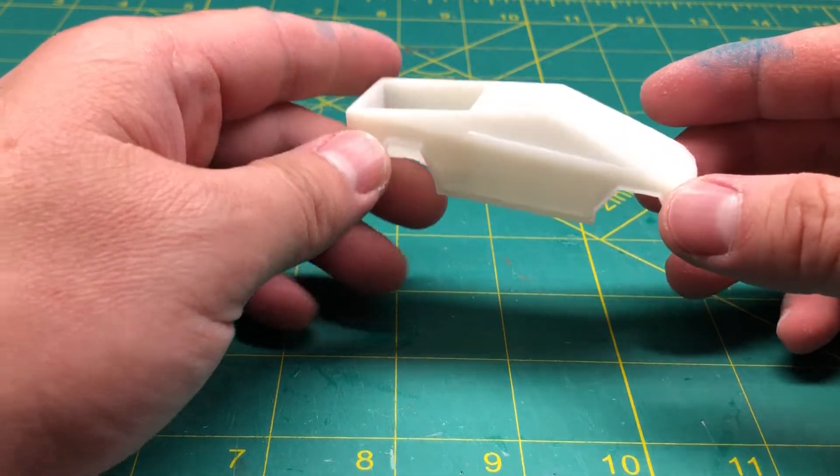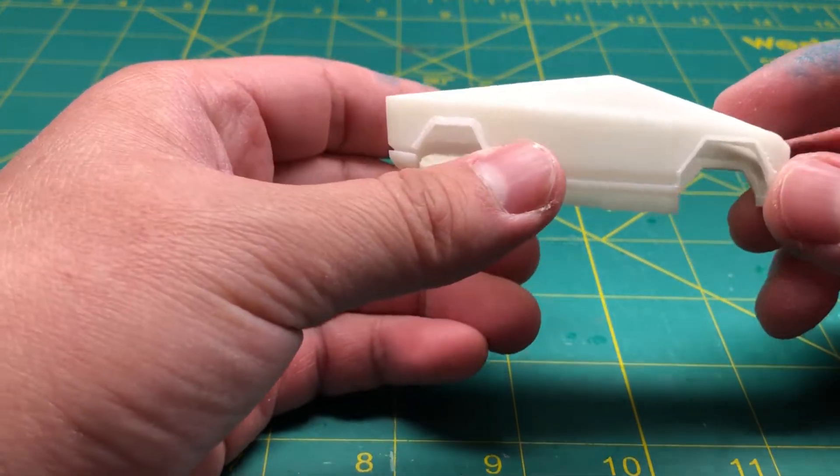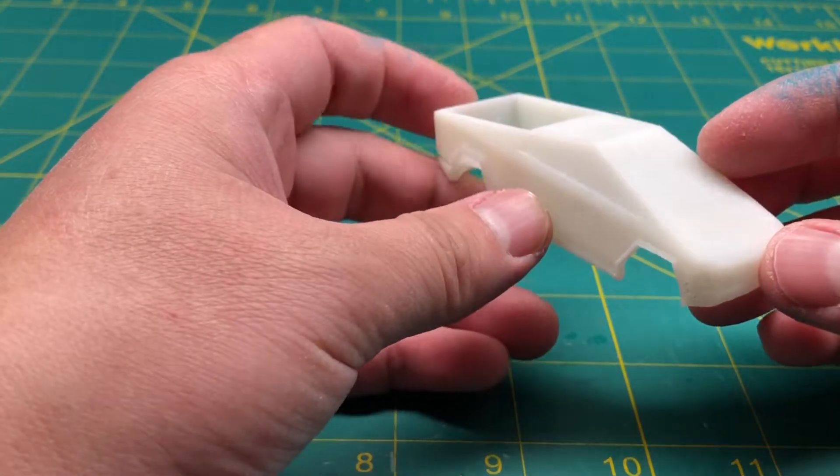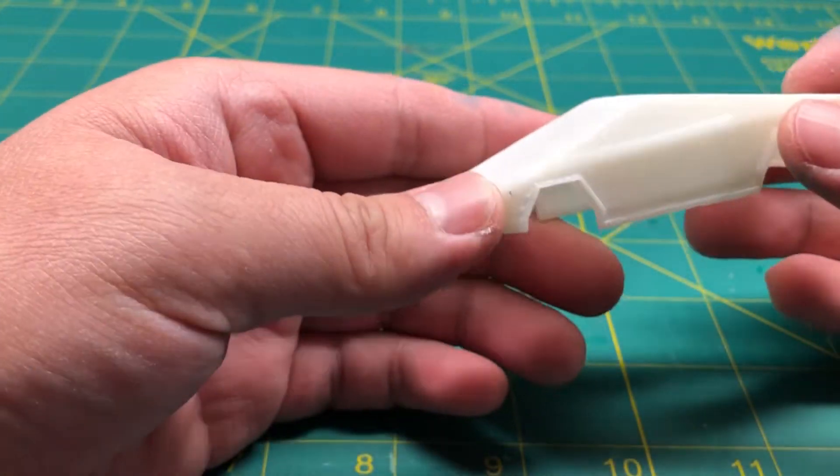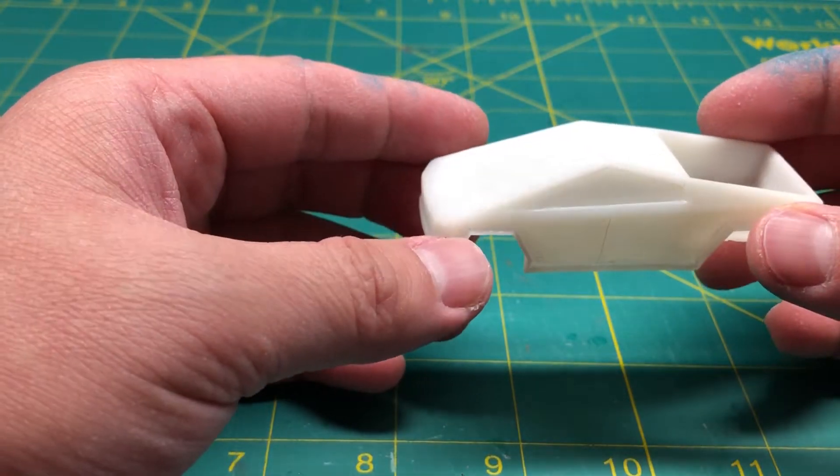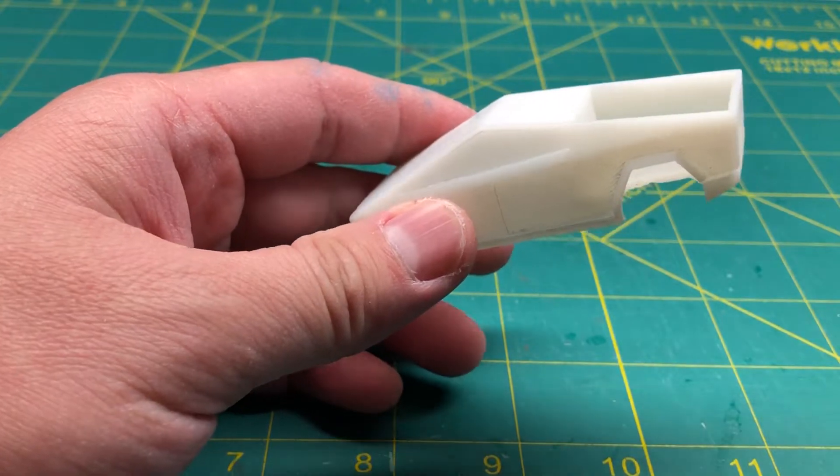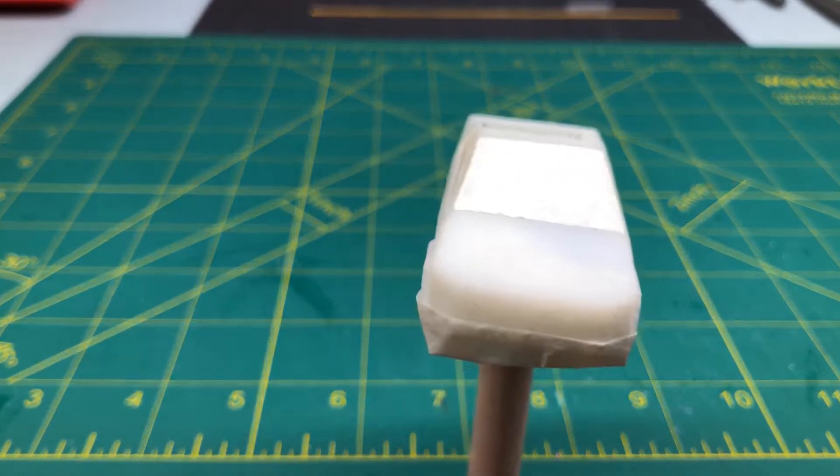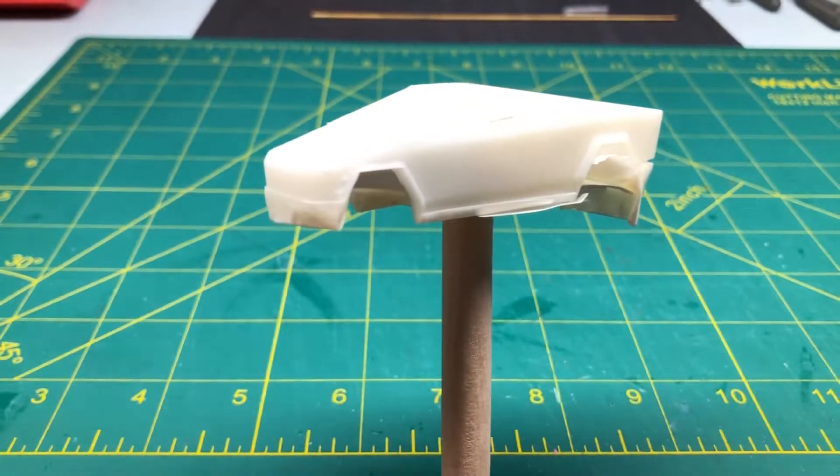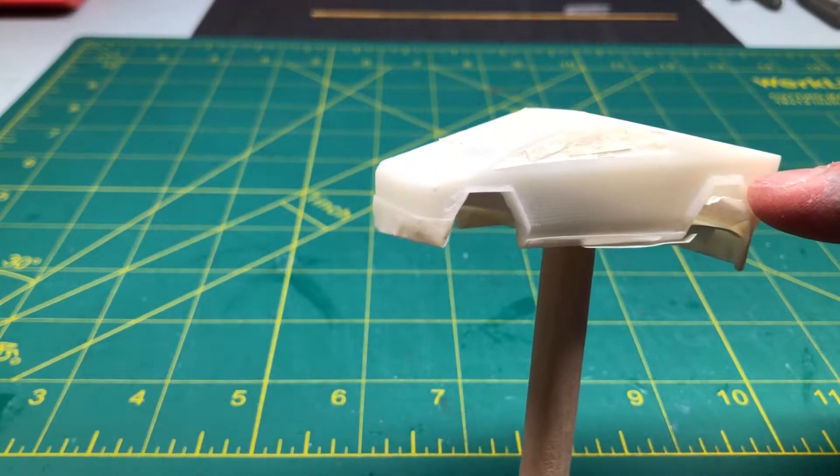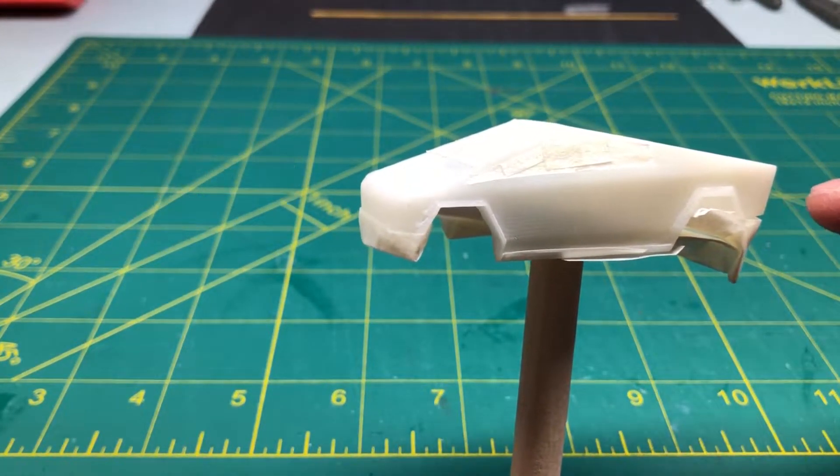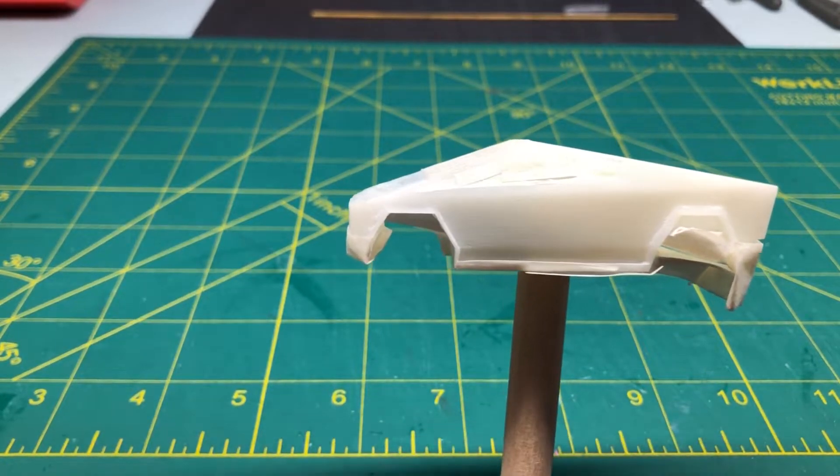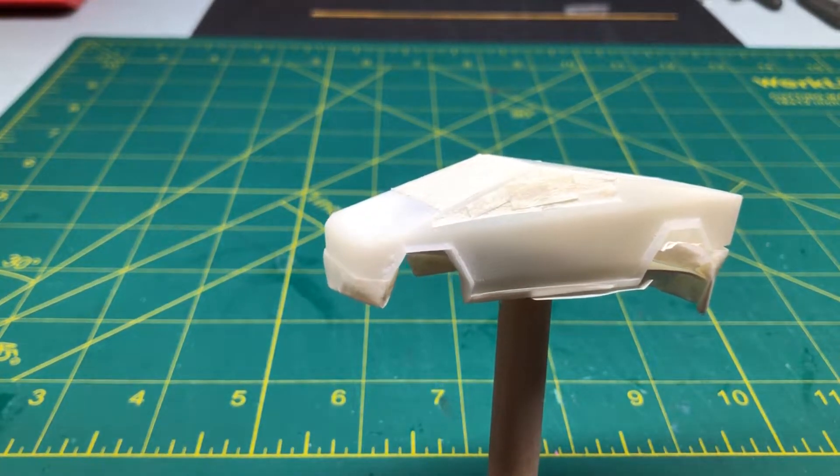Now we need to mask off the areas where the silver won't be, and then we can go ahead and spray paint it the metallic silver. I masked it off as best I could. I couldn't get over the fender because the tape wouldn't fit, so I figured I'll just paint over the silver with black.